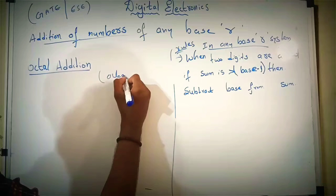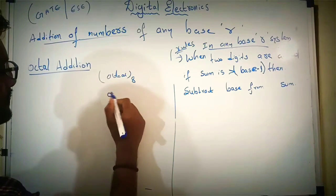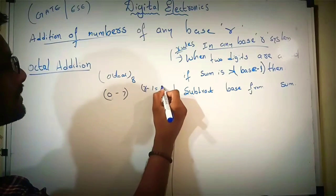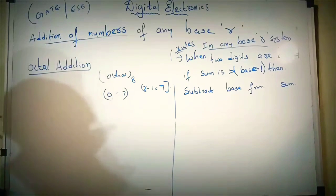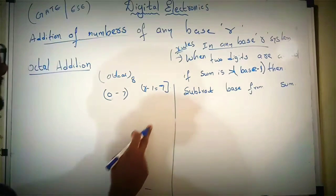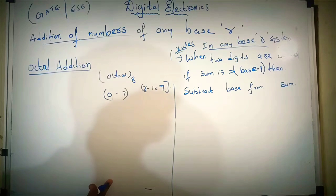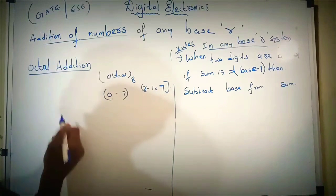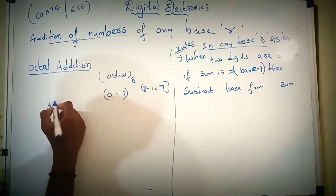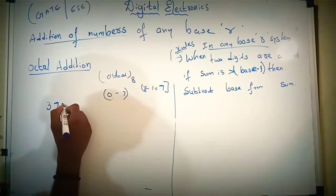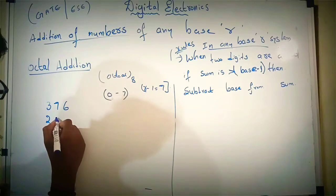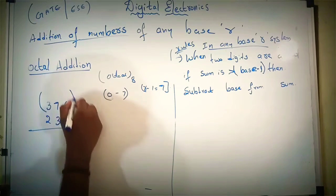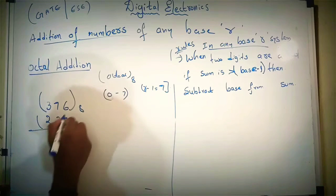Now we will see octal addition. The base is 8, so the numbers are from 0 to 7. R minus 1 is equal to 7. So whenever the sum is greater than 7, simply subtract the base from the sum. Let's take two numbers: 3 7 6 and 2 3 7. Here this is base 8.